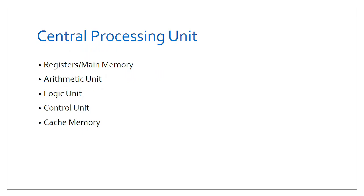What makes the CPU such an effective component — the brain of the computer — is that it has main operational units: registers, the arithmetic unit, logic unit, control unit, and cache memory. We can organize the various parts of the CPU to ensure those units work in tandem to achieve a particular objective in terms of functionality and performance. The arithmetic unit ensures the CPU can add, subtract, and perform arithmetic operations. The logic unit allows the CPU to compare, using operations such as greater than, equal to, and so on.